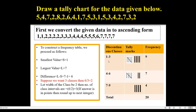So I have taken the first class as 1 to 3. Then the next class is 4 to 6. Then the next class is 7 to 9. Like this we can calculate the discontinuous classes.